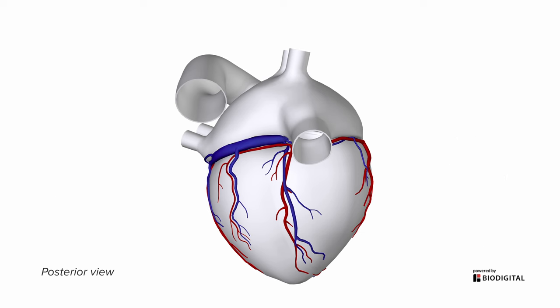Now let's talk about the venous drainage of the heart. Here we can see the inferior vena cava draining into the right atrium, and just to the left of that we see a very large vessel on the surface called the coronary sinus, which is going to be the major venous drainage for all of the veins on the surface of the heart.